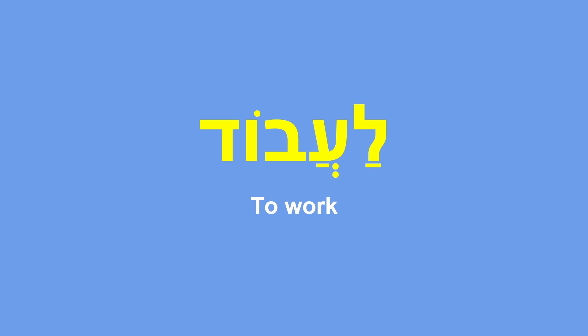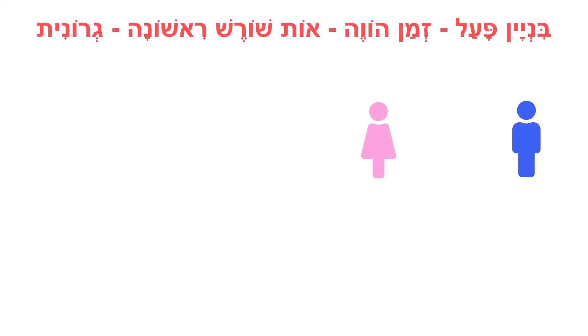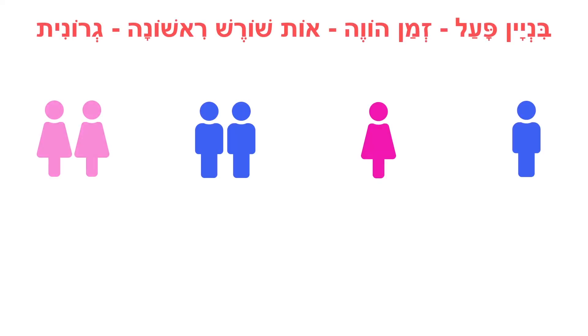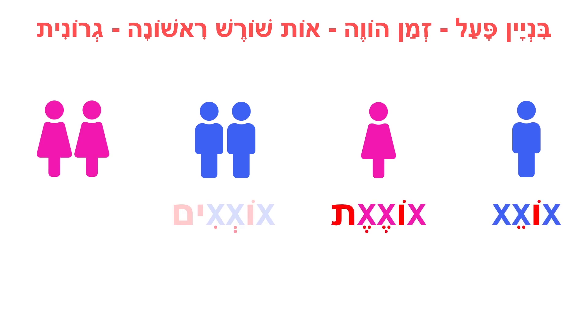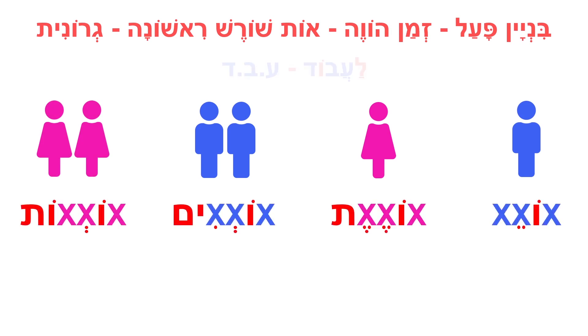I can already tell you that it will be similar to verbs like Lilmod. We have four conjugations, and the conjugation pattern in the present tense looks like so. The verb Laavod contains the root letters Ayin, Bet, Dalet, and let's just place them inside the template — inside this pattern — and find out how we conjugate it in the present tense.